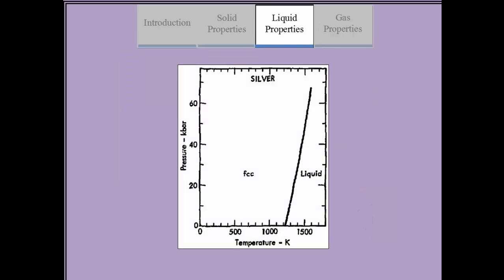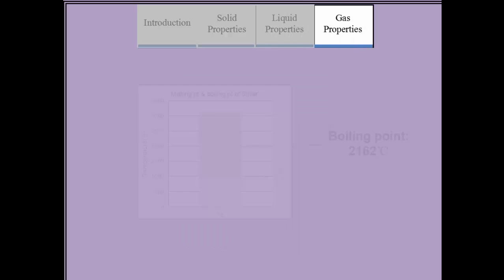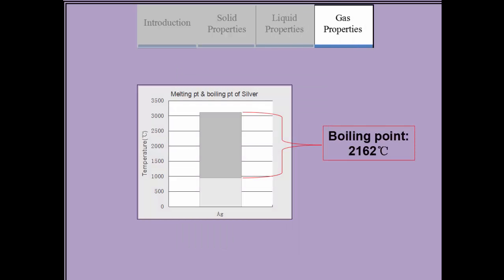Silver has a melting point of 961.78 degrees Celsius. At 2,162 degrees Celsius, silver boils to become silver gas.